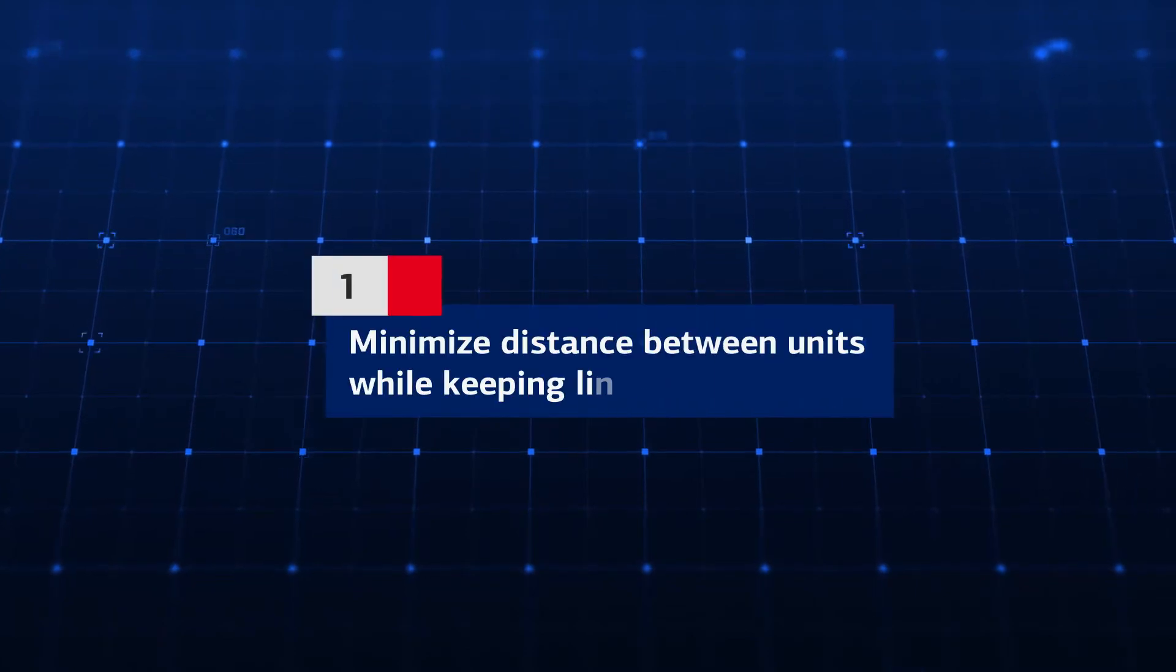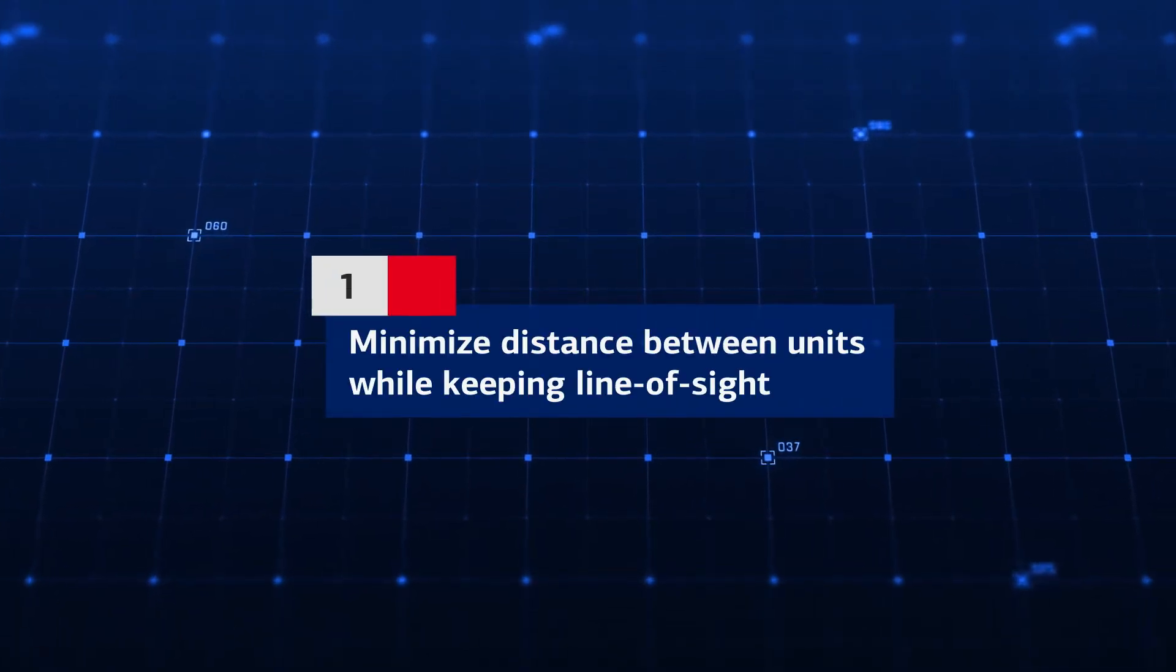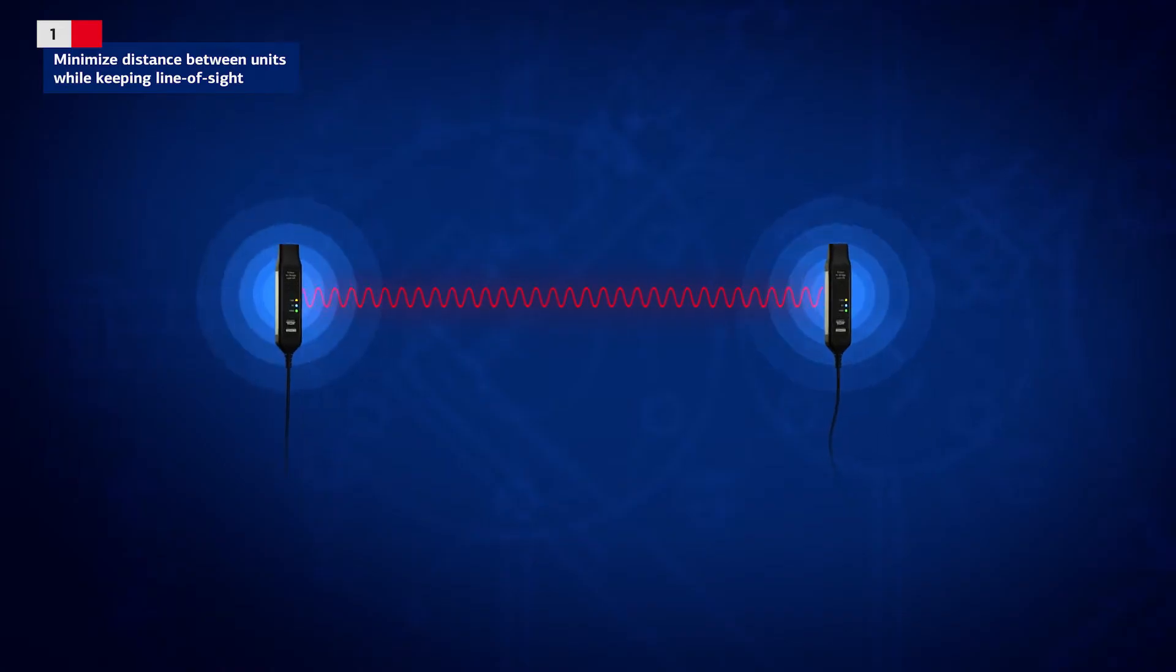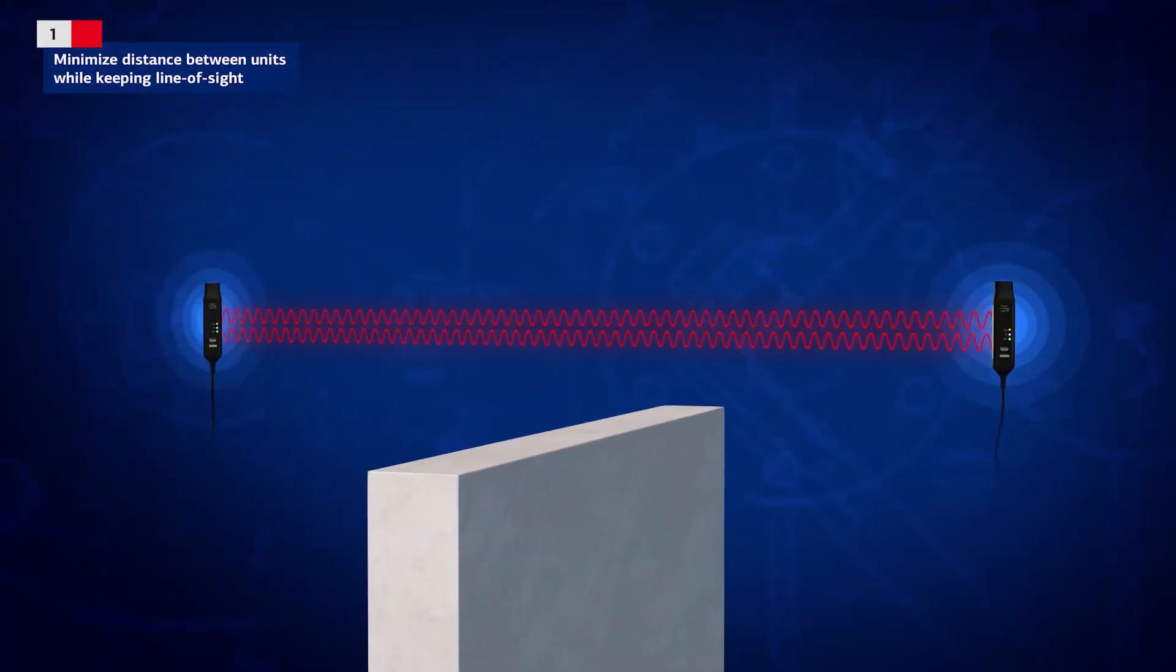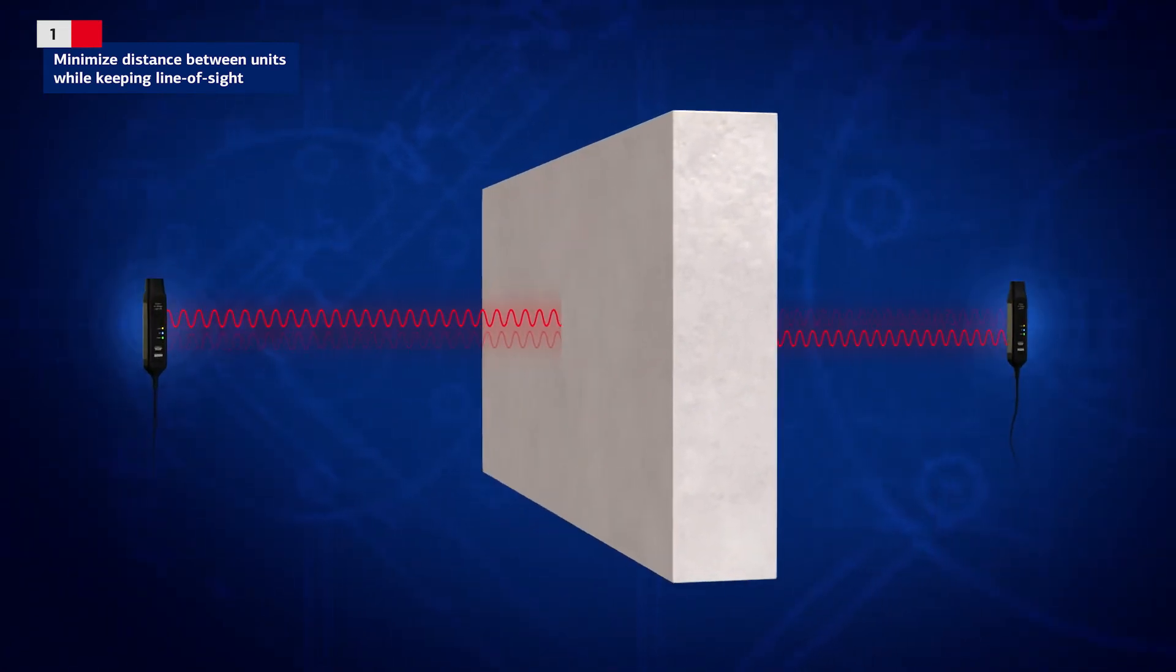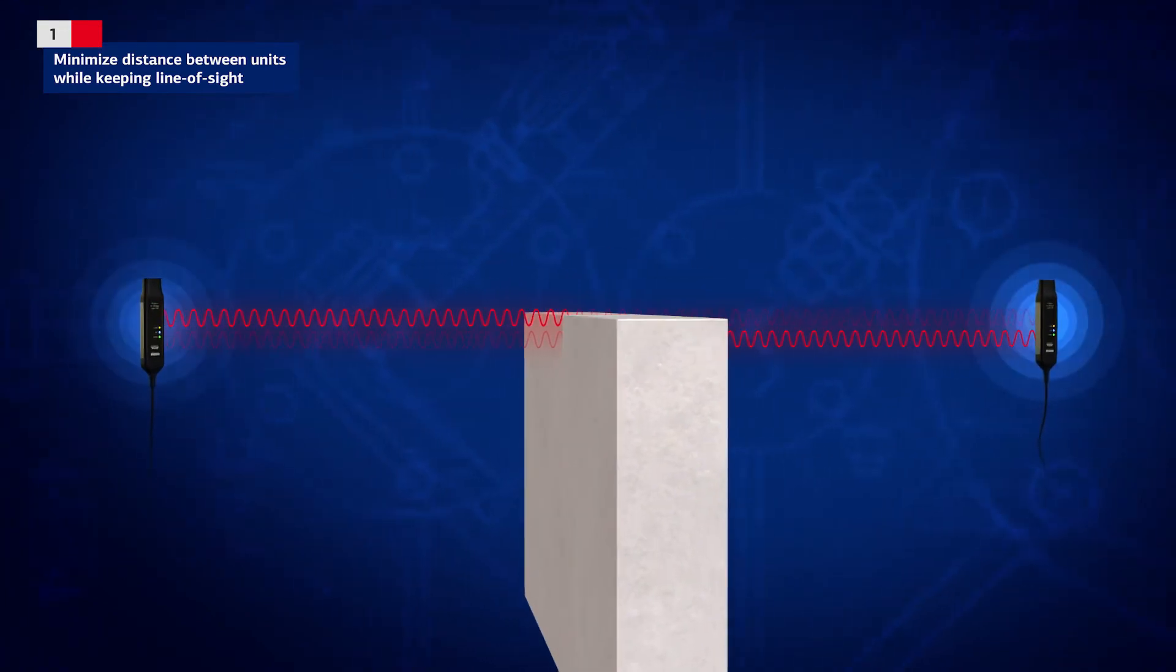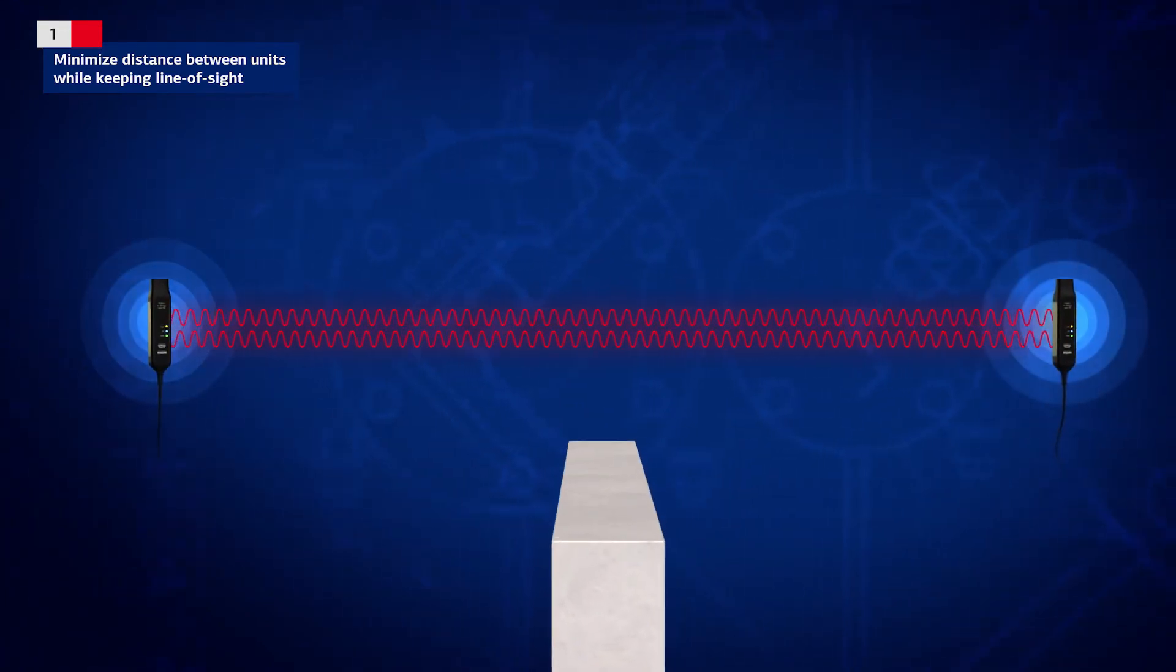Rule number one: minimize distance between units while keeping line of sight. Keep the distance between the AirBridge units short, if possible, and make sure that they are in line of sight of each other. Otherwise the radio signal will be weakened, limiting the AirBridge's range. Try to avoid having obstacles very close to the line of sight path.